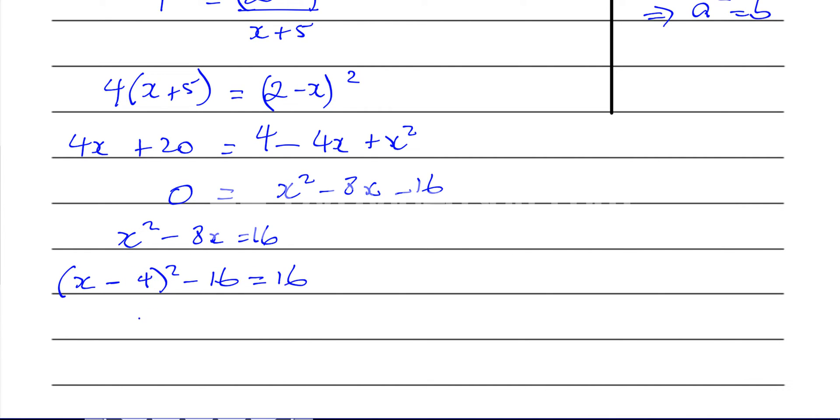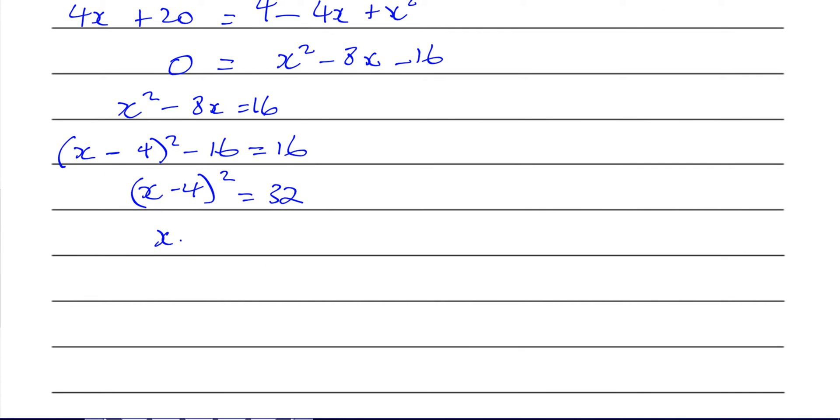So you end up with (x - 4)² equals 32. So that means x - 4 will give you plus or minus the square root of 32.